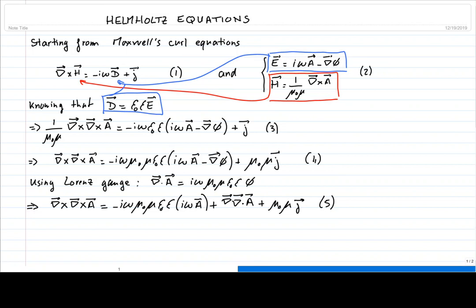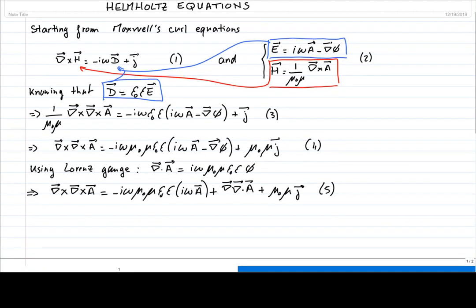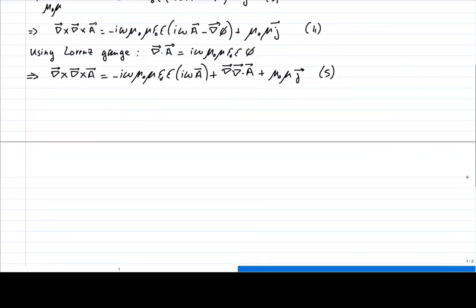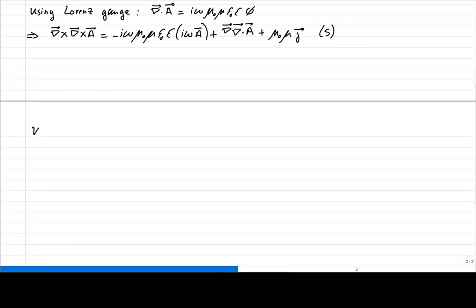We can also use a well-known vector identity from any mathematical physics textbook to rewrite and simplify this equation further. The curl of the curl is equal to negative nabla-squared (the Laplacian) plus the gradient of the divergence. This allows us to rewrite equation 5 in a different form.